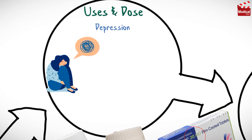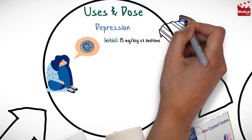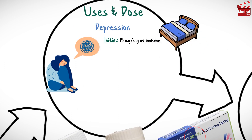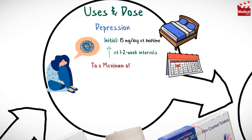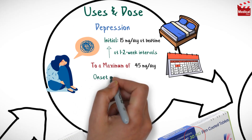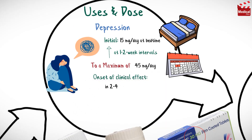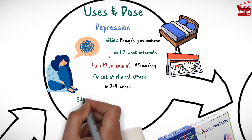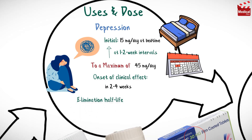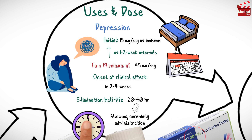The usual initial dose of mirtazapine is 15 milligrams per day at bedtime, increasing at one to two week intervals to a maximum of 45 milligrams per day. Mirtazapine has an onset of clinical effect in two to four weeks, similar to other antidepressants, and it has an elimination half-life of 20 to 40 hours, allowing once daily administration at bedtime.